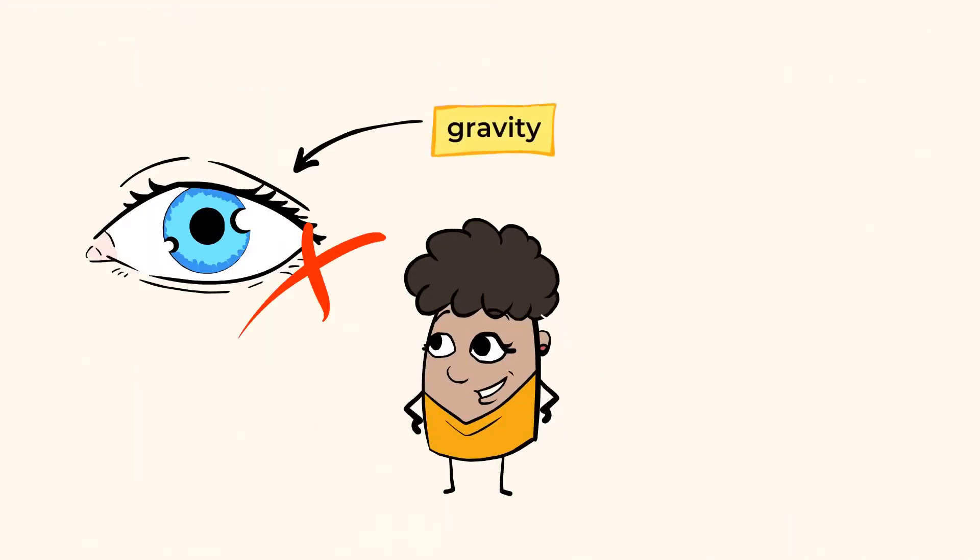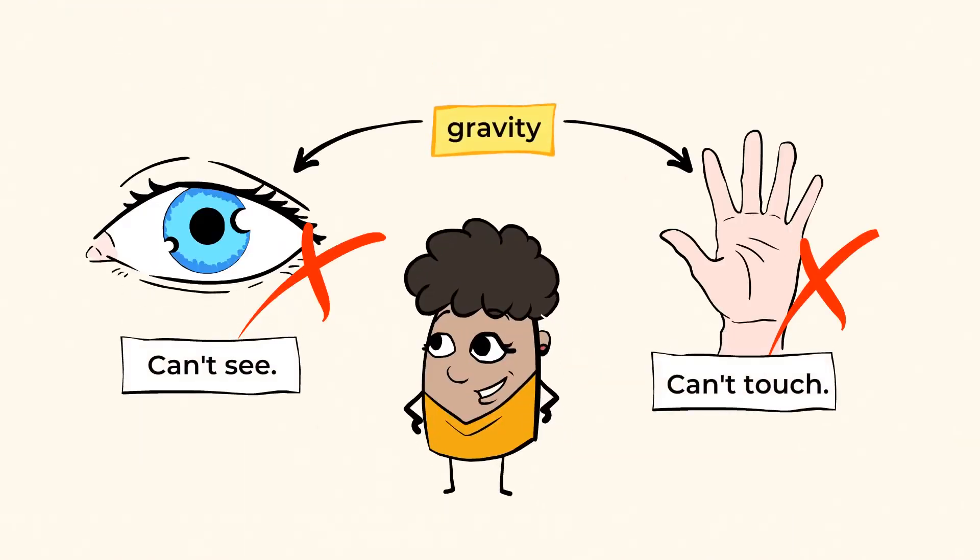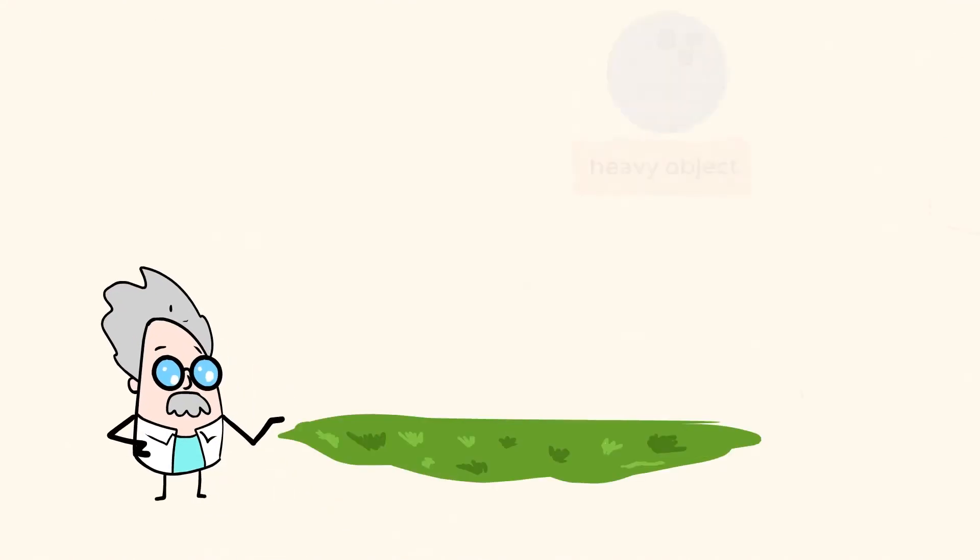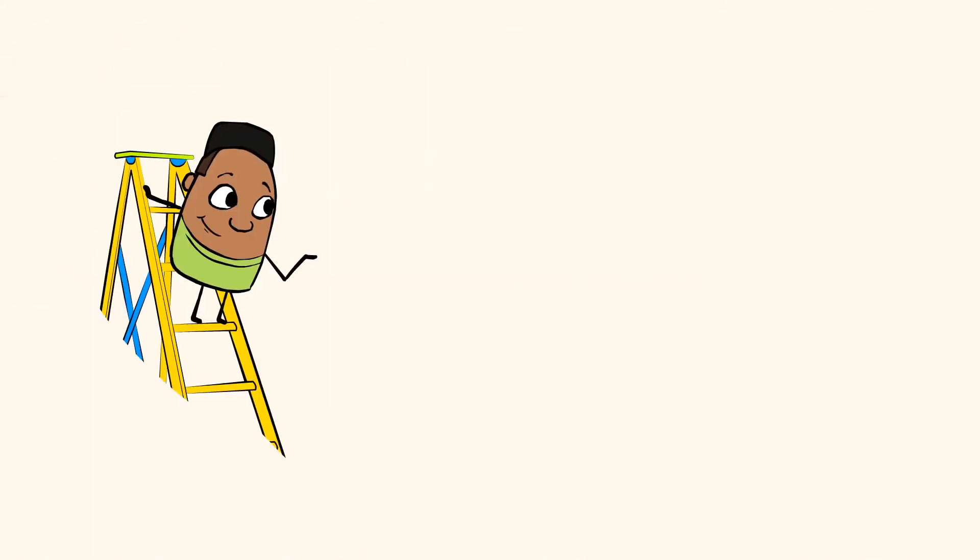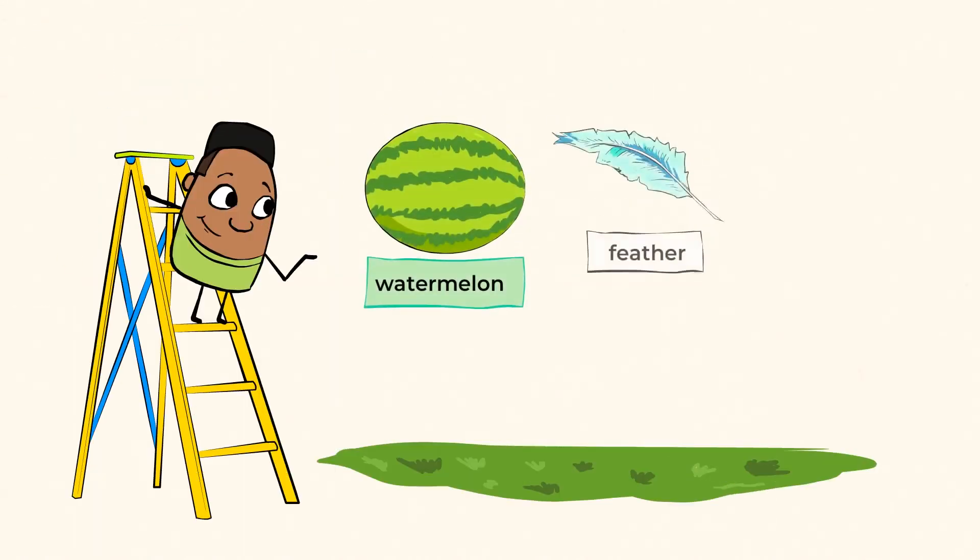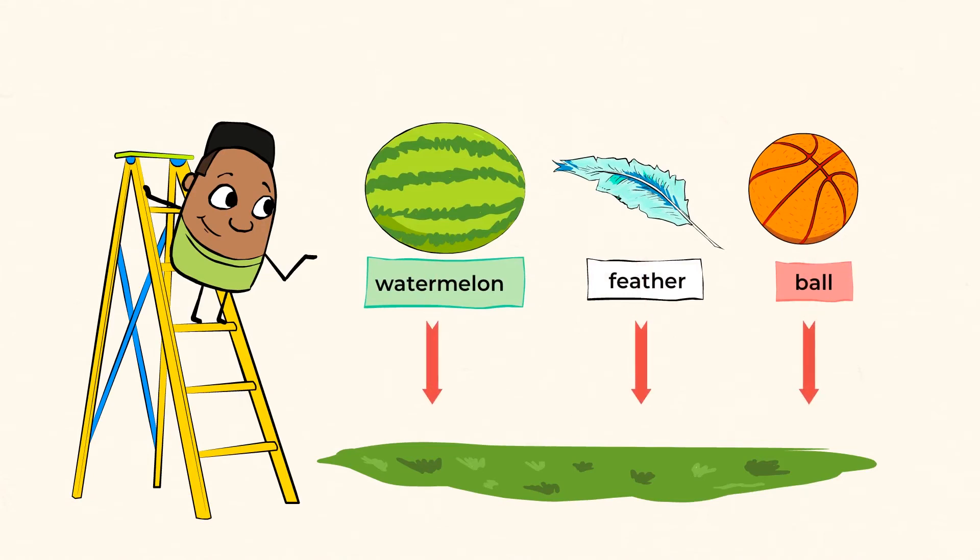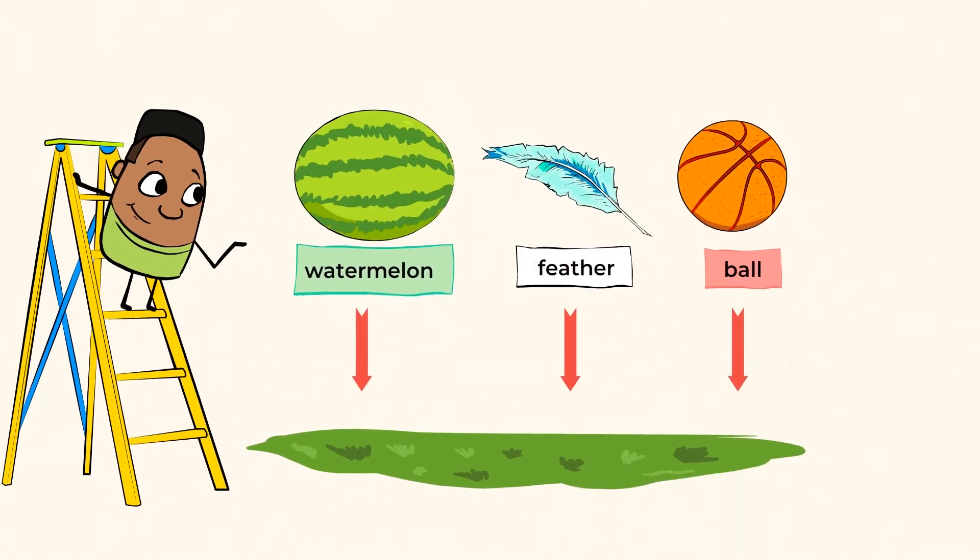Now you can't see or touch gravity, but it's always there. In fact, no matter how heavy or light an object is, gravity will still pull it back down to the ground. You can climb up a ladder and drop a watermelon, a feather, or a ball. It doesn't matter. They will all still fall back down to the ground.